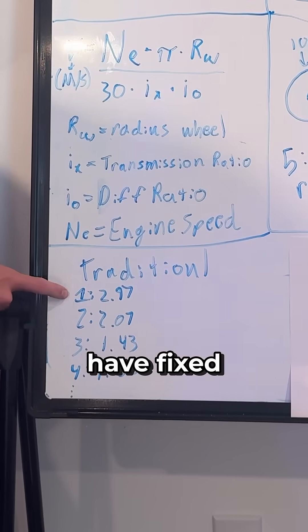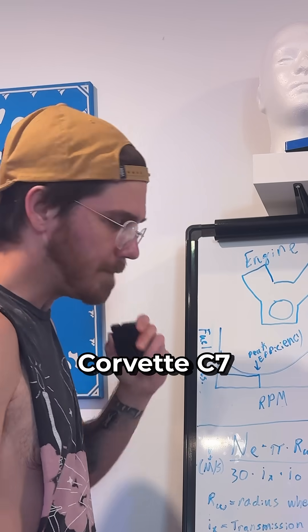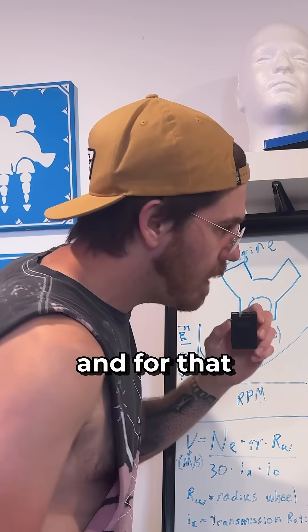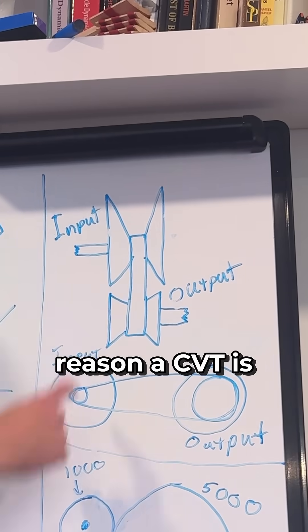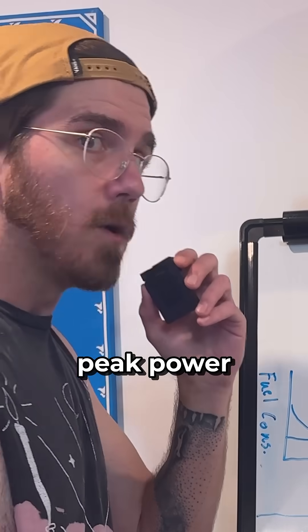Traditional transmissions have fixed gear ratios. This is from a Corvette C7. CVTs, on the other hand, can be nearly infinite, and for that reason a CVT is going to be best for peak efficiency but potentially even peak power.